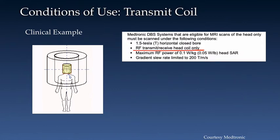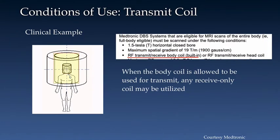Let's take a look at a clinical example of labeling which dictates what type of coils we should use. In this example, courtesy of Medtronic, these are the conditions of use of a DBS system. It not only specifies the body part that may be imaged — in this case a head-only scan — but also dictates the type of RF coil to be used. For this particular DBS system, restricted to head-only imaging, a transmit-receive head coil is the type of coil that must be used. For another type of DBS system that is eligible for MR scans of the entire body — sometimes referred to as full-body eligible — when the integrated body coil can be used for RF transmit, then any type of receive coil can also be utilized.